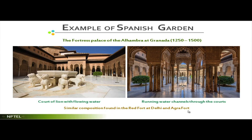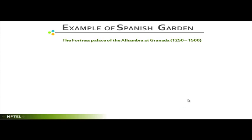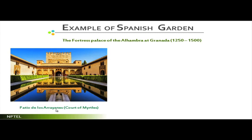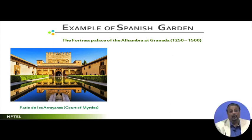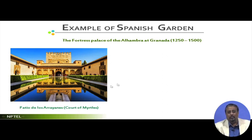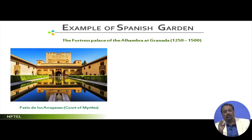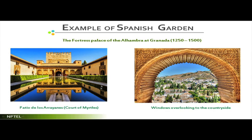Similar composition is also found in the Red Fort of Delhi and Agra Fort, which I will discuss later. This is the Basio dello Aryanese, the Court of Metals. If you look at it, people get amazed to see a nice reflection of the structure. We are discussing landscape - aesthetics is also part of it - but here you do not see much greenery. What you have is the water body and a very low-height hedge, and that creates grandeur in this particular landscape style. Referring to the windows overlooking outside, they have different such punctures on the exterior wall so whenever they look around they will see the hills, the blue sky, and the greens.